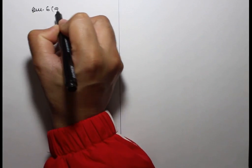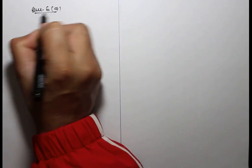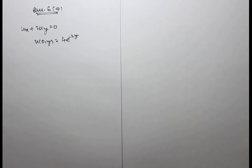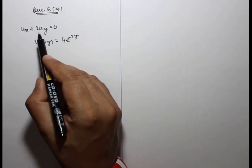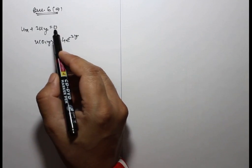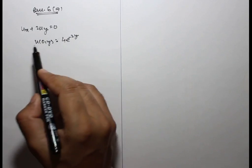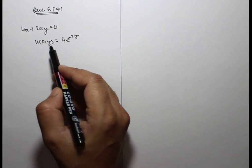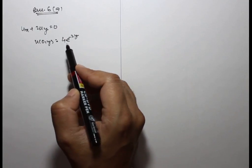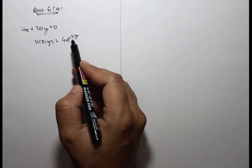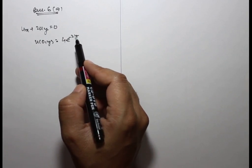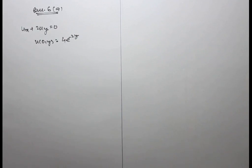Question 6 part A. Solve the initial value problem: ux plus 2uy equals 0, and u(0, y) equals 4e raised to minus 2y, using the method of separation of variables.